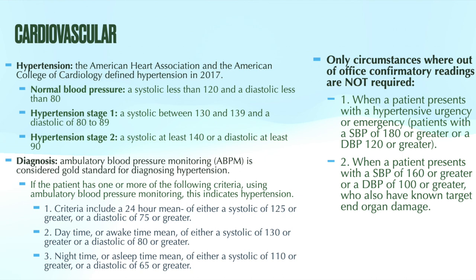When instructing patients to go home and monitor their blood pressure, confirm they have access to a validated automated device that calculates blood pressure using the brachial artery. Instruct them to take their blood pressure in a quiet room after five minutes of rest, in the most comfortable position possible — arms at their side, legs uncrossed, back straight. Between 12 and 14 blood pressures should be taken, including both morning and evening measurements, over a period of about one week each month.